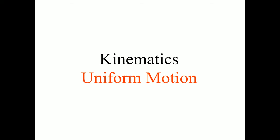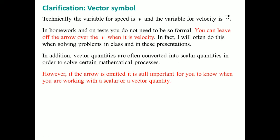Welcome to the AP Physics video lecture on kinematics. Here we're going to cover uniform motion. To clarify in terms of the vector symbol, technically the variable of speed is considered to be V. The variable for velocity would be that vector arrow on top of V. In any of your homeworks or tests, you don't need to be so formal — you could leave the arrow off when writing velocity. I will often do this when solving problems in class. Some vector quantities are often converted into a scalar quantity in order to solve certain mathematical processes.